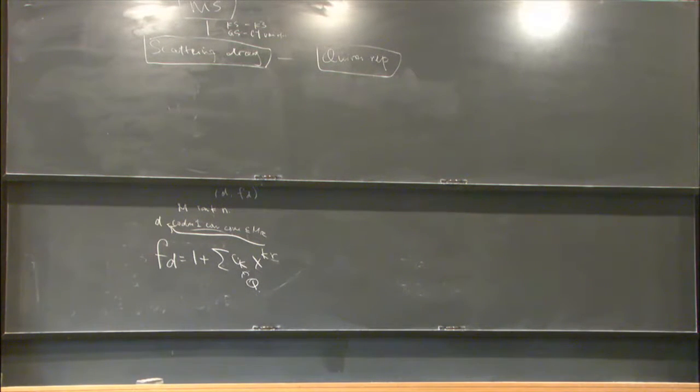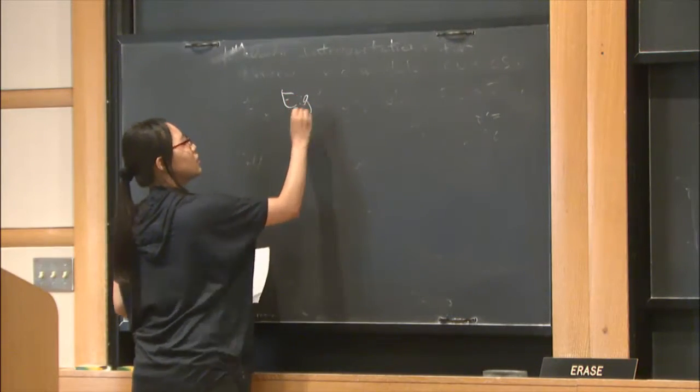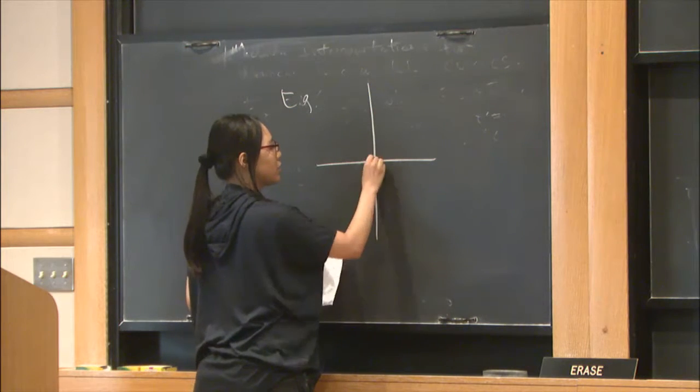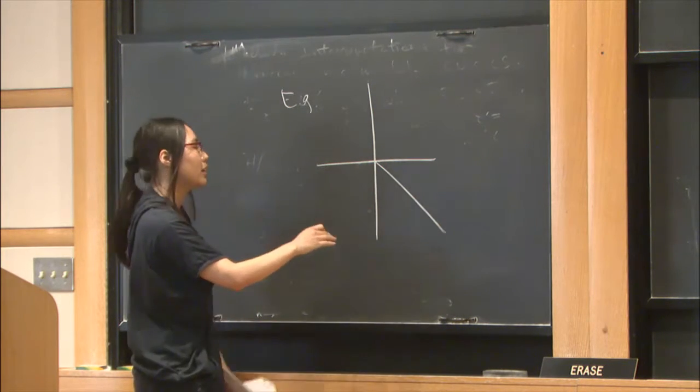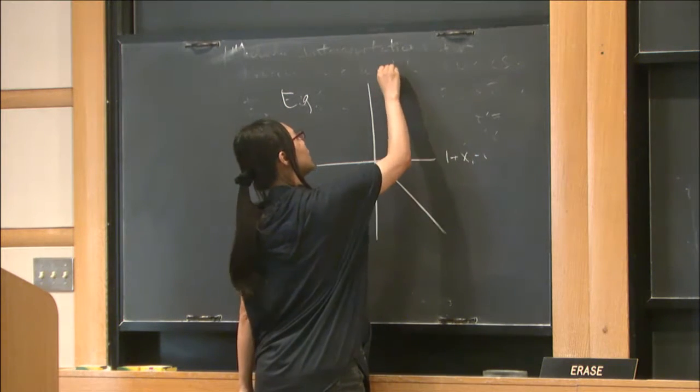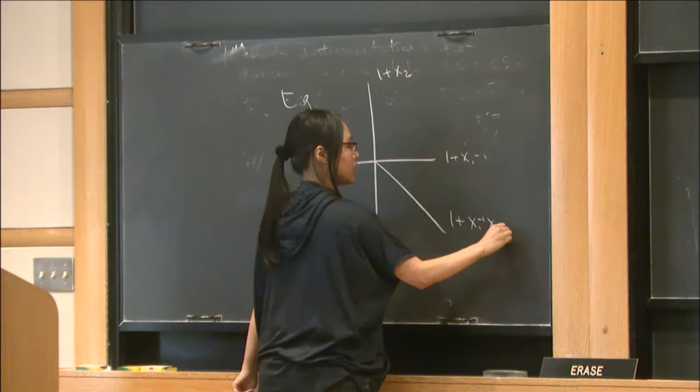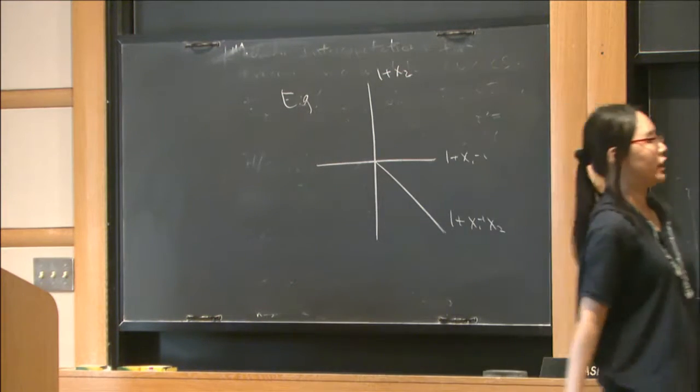And let us go for maybe one basic example. A scattering diagram is we have three walls: the X, Y axis, and this way. And then the attaching function will be of this form.